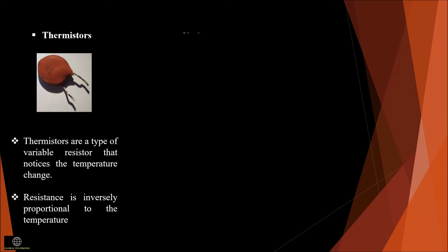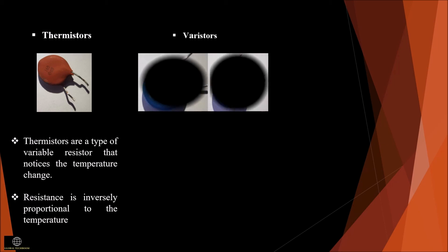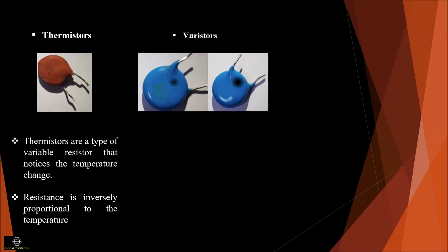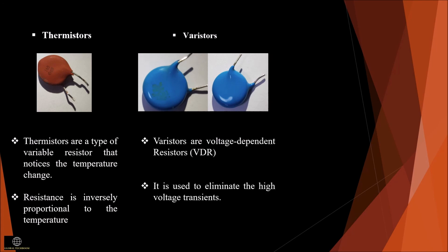Varistors are voltage dependent resistors used to eliminate high voltage transients. When voltage increases across a connected sensitive device, it changes the level of voltage.